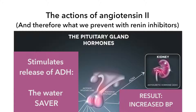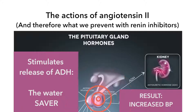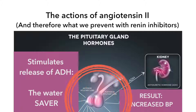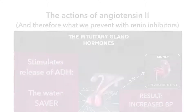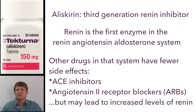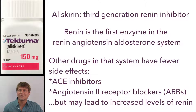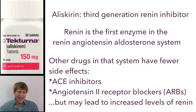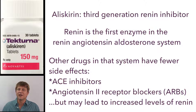Finally, angiotensin-2 stimulates the pituitary gland to release ADH, or antidiuretic hormone — the water saver — which raises blood pressure as well. So renin is the first enzyme in the renin-angiotensin-aldosterone system, and direct renin inhibitors bind to the active site of renin to prevent it from participating in the cascade.